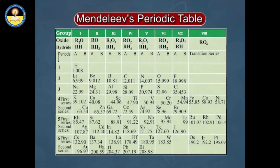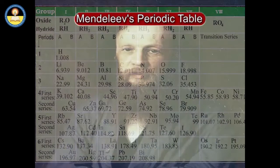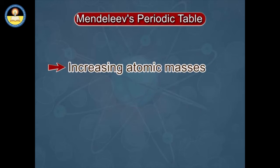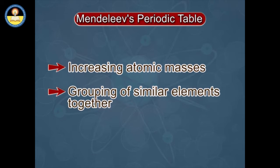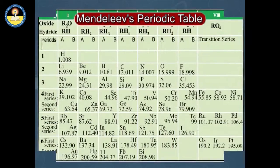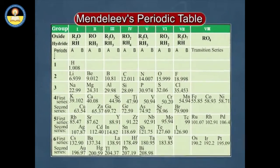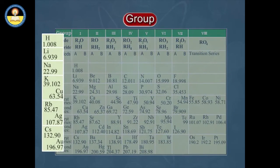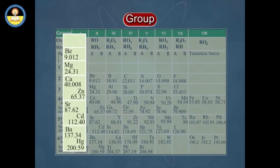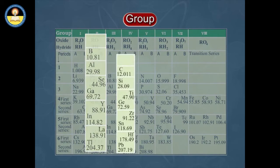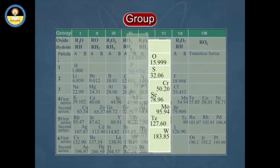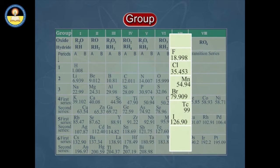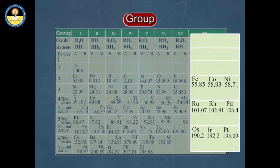While developing the Periodic Table, Mendeleev kept two things in mind: one, increasing atomic masses, and second, grouping of similar elements together. To be sure that elements with similar properties fall in the same vertical column or group, Mendeleev had to place an element with a slightly higher atomic mass before an element with a slightly lower atomic mass.